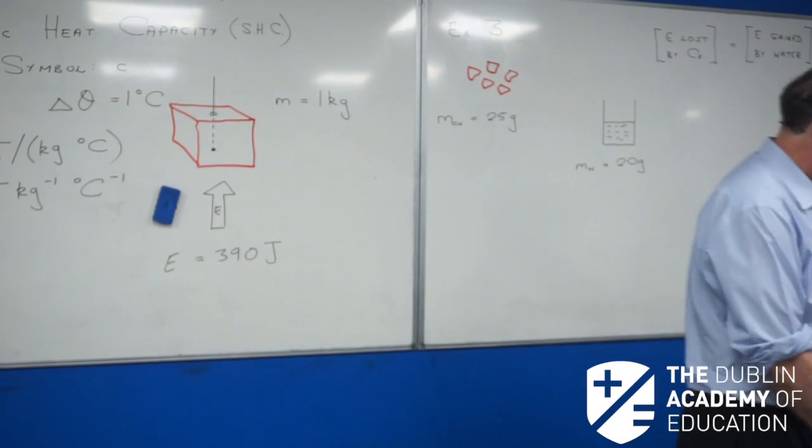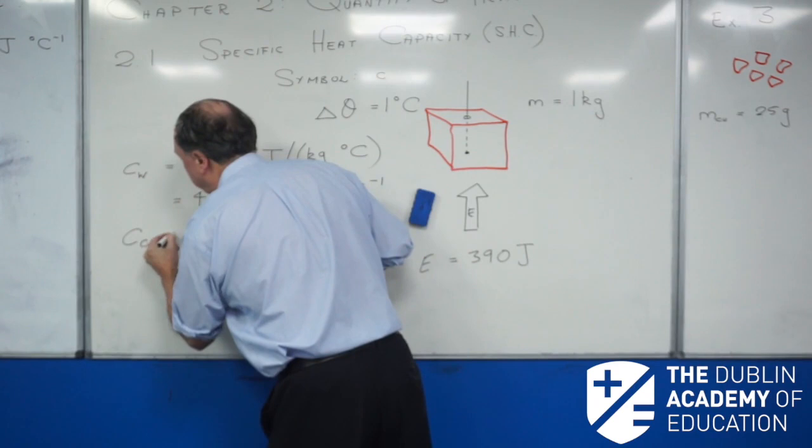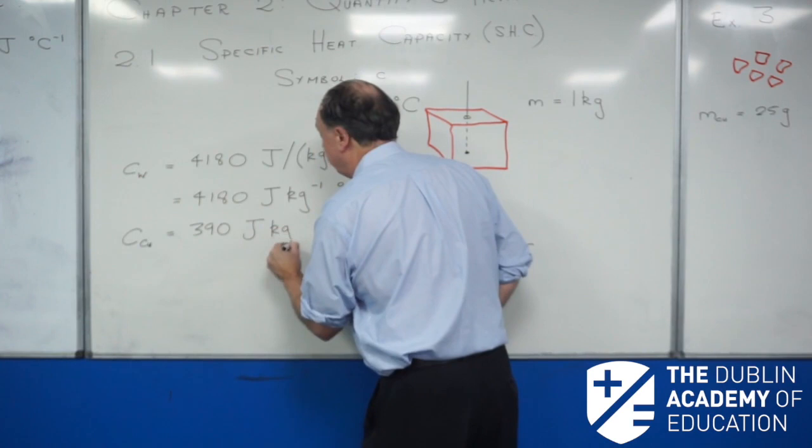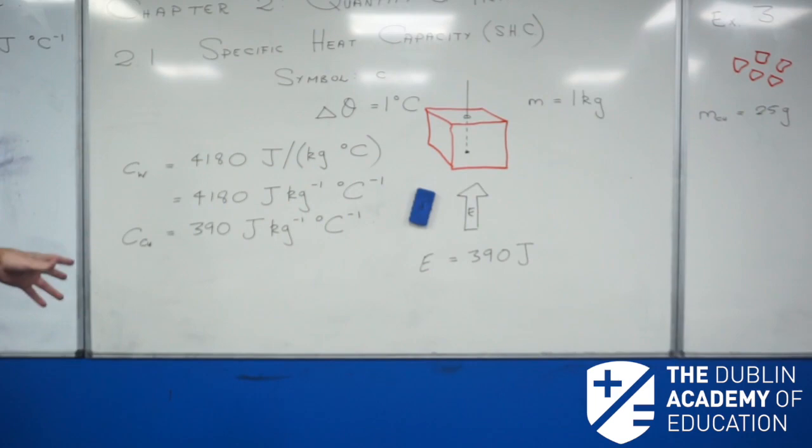The SHC of copper — the symbol for copper is Cu — so I'll write CCu, and that's 390 joules per kilogram per degree Celsius. Those values are not in the table book, so if you get a problem on this in the Leaving Cert, they're going to have to write those values down on the paper.